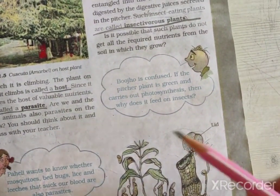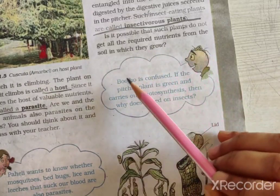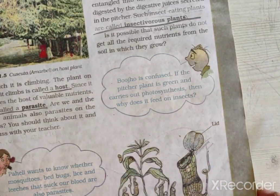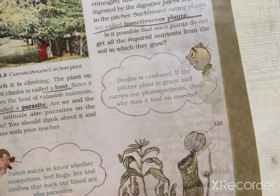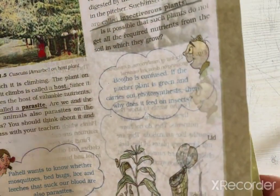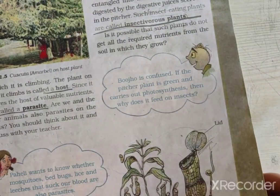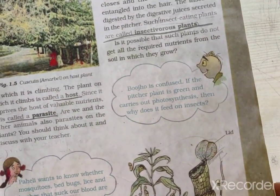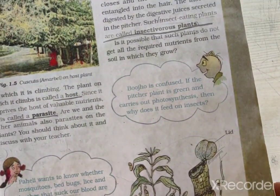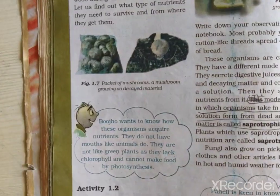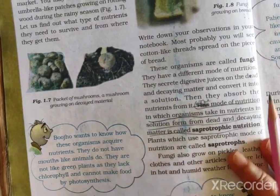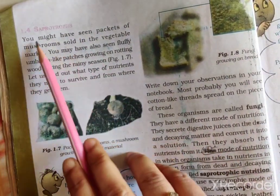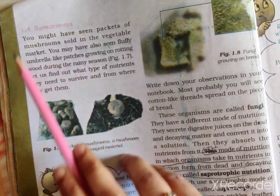It is possible that such insectivorous plants do not get all the required nutrients from the soil in which they grow. Usually most plants get all their required nutrients from the soil. Now let's learn about one more type — saprotrophic mode of nutrition.